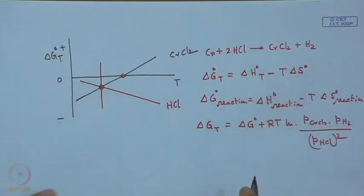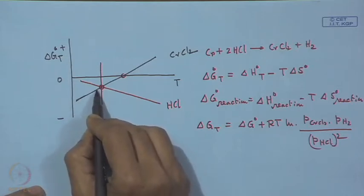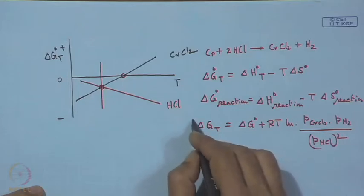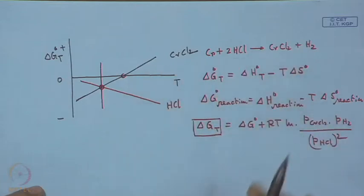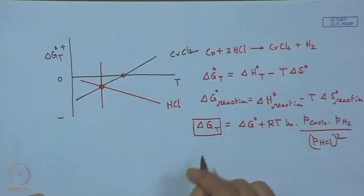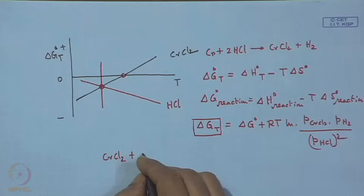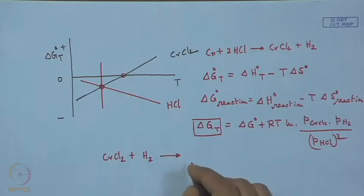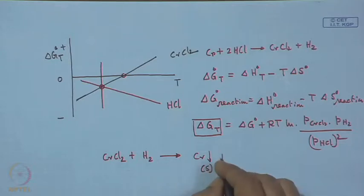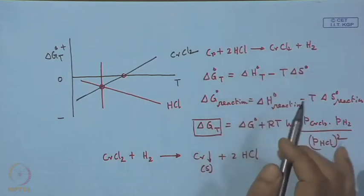This is generation of CrCl2 on this side. We can shift this point to get a highly negative value of delta G_T so that the reaction moves in the forward direction. When it comes to reduction of CrCl2 with H2, the reaction should be reversed: CrCl2 + H2 → Cr (solid film) + 2HCl.